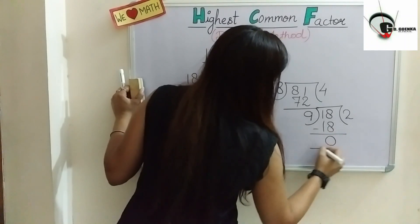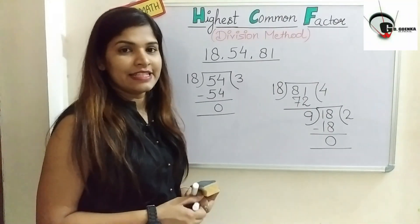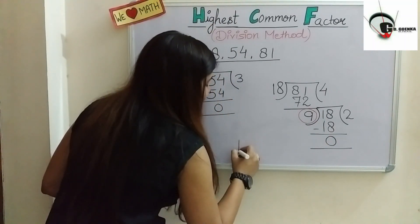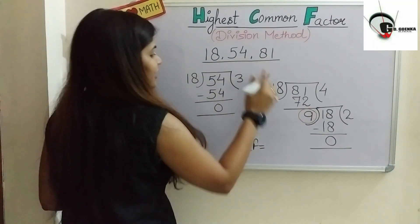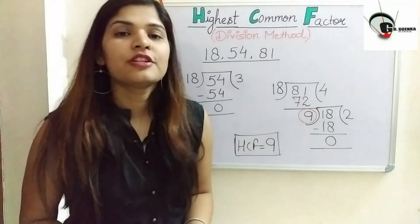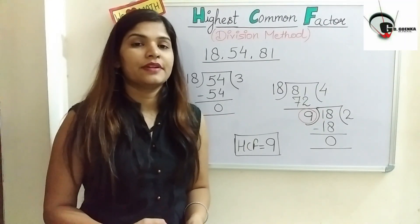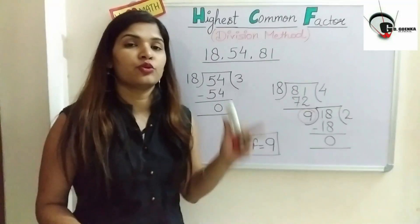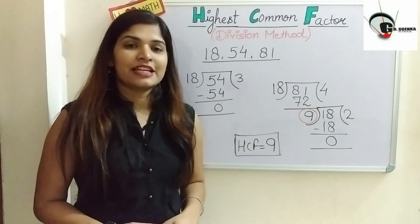We get a remainder of 0. As you know, the last divisor is always our HCF. The last divisor is 9, so the HCF of all three numbers 18, 54, and 81 is 9. I hope you liked this video. In the next video we are going to continue with word problems related to HCF, so wait for my next video. Till then, stay at home, stay safe — bye-bye!